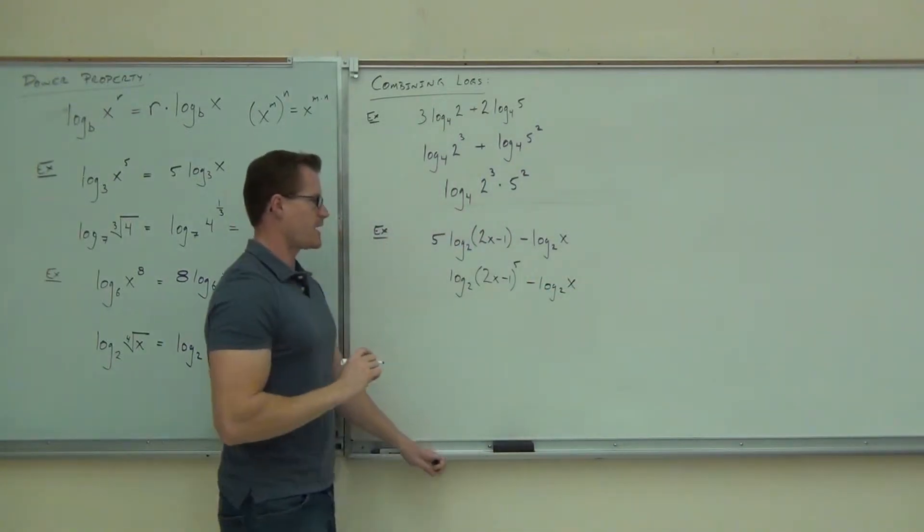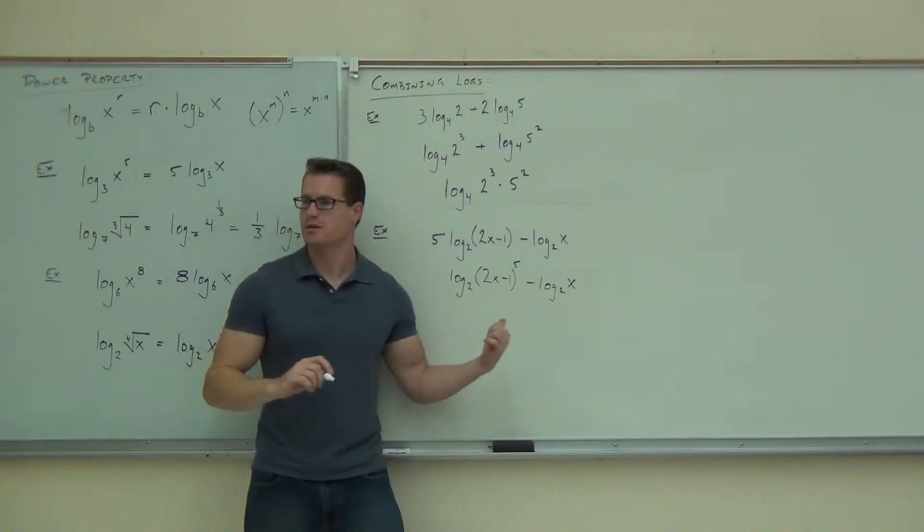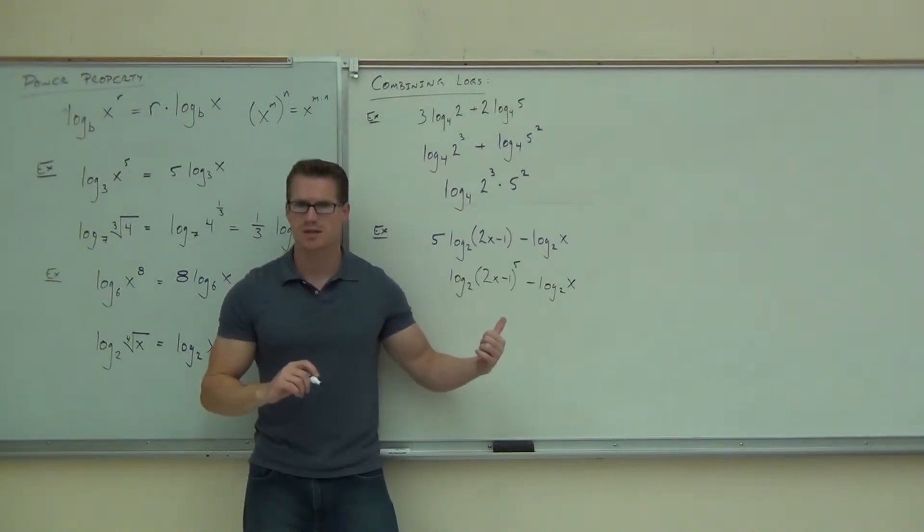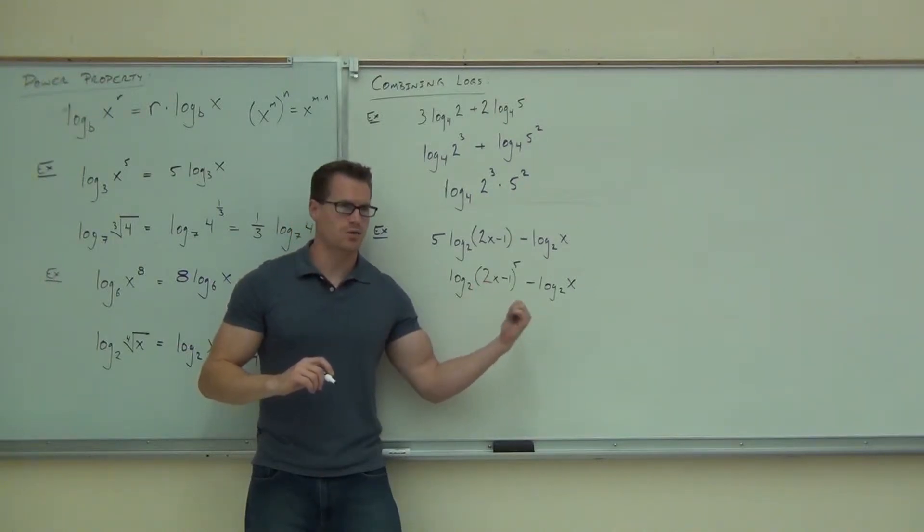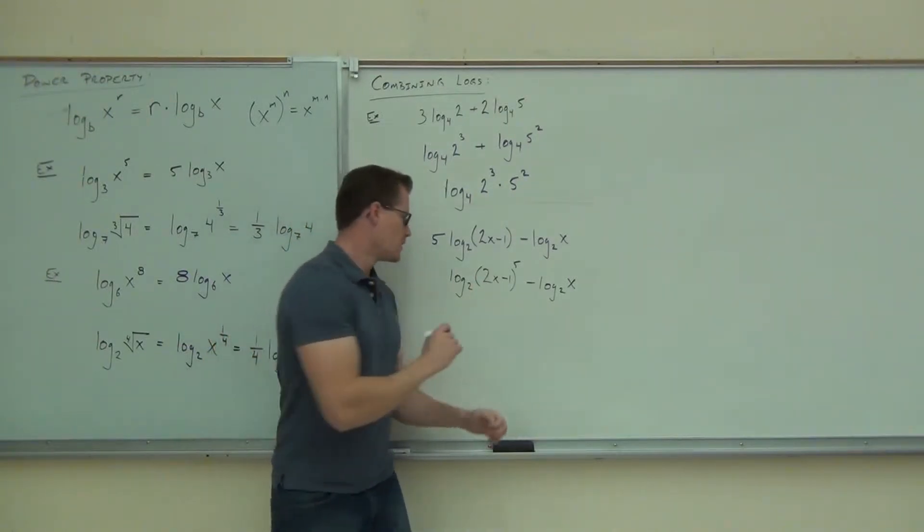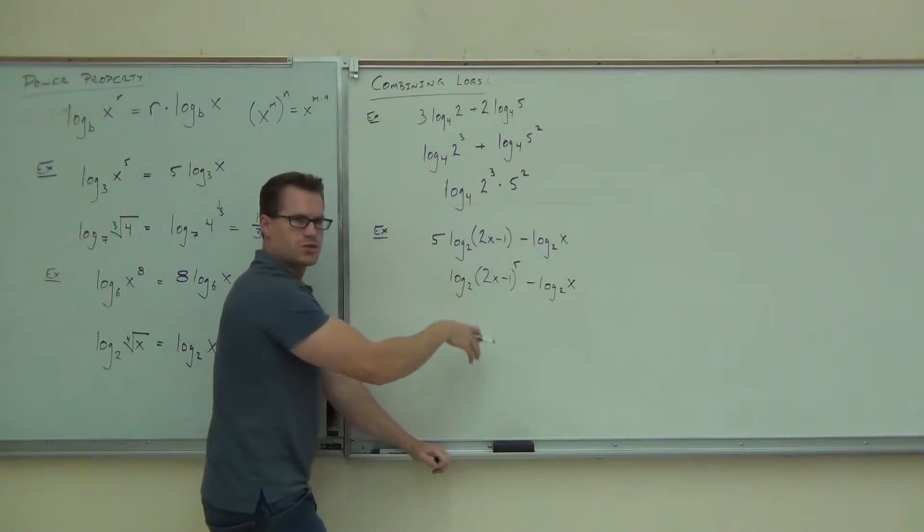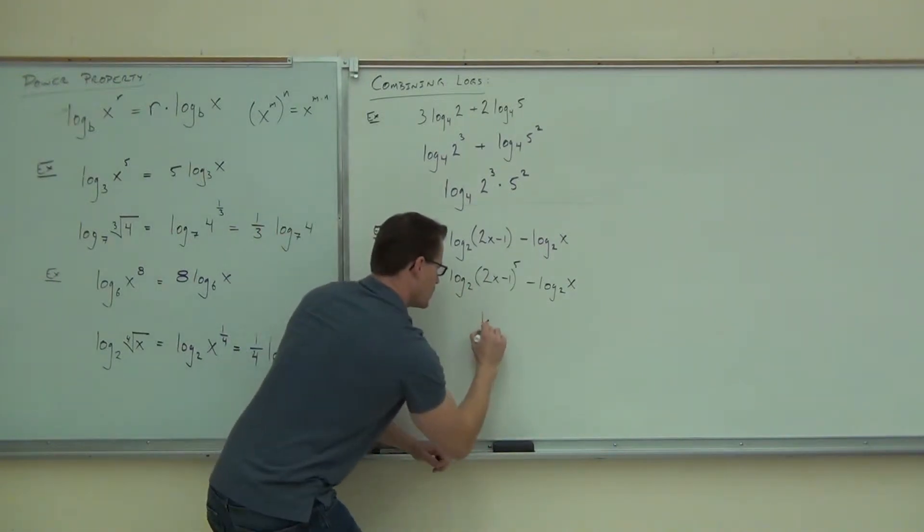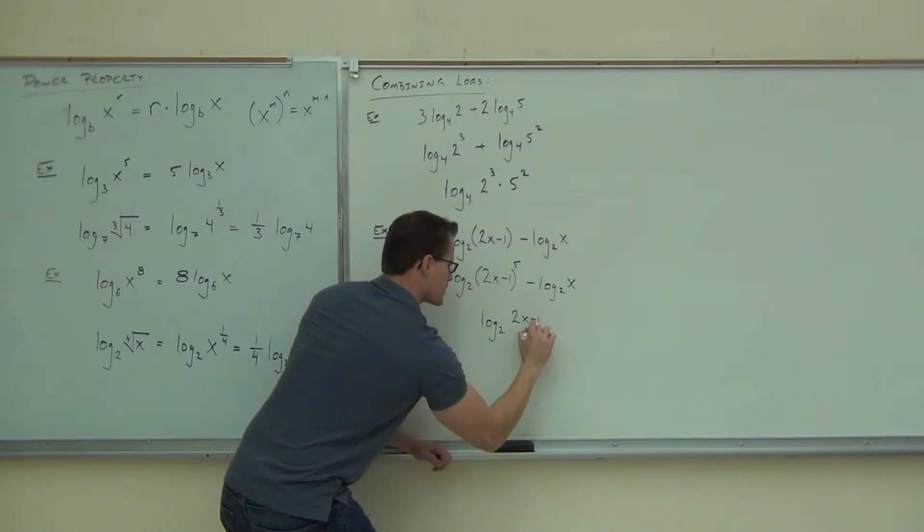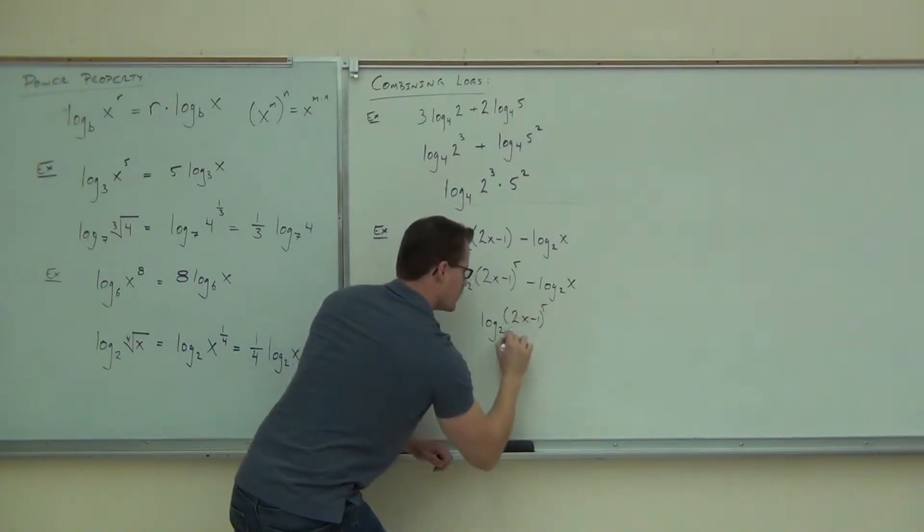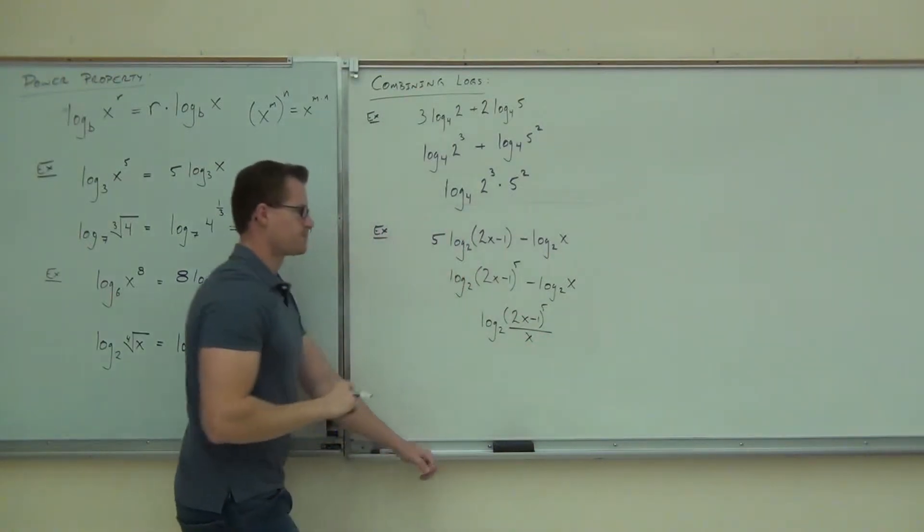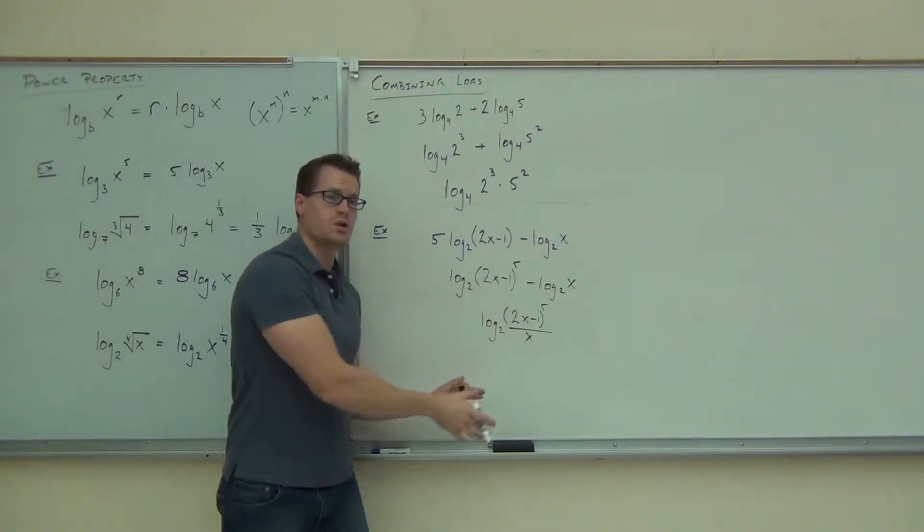Minus log base 2 of x. Can I combine the rest of this? Yep. I've got subtraction, I've got the same exact base here. That means this is a product or a quotient? Quotient. That's going to be one single log or two logs? One log. 2x minus 1 to the 5th, I'm not changing that at all, over x. That's it. That's as far as you can go.